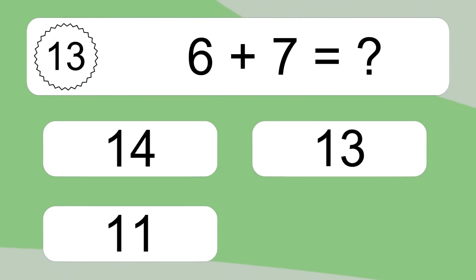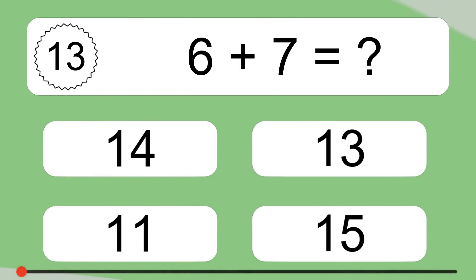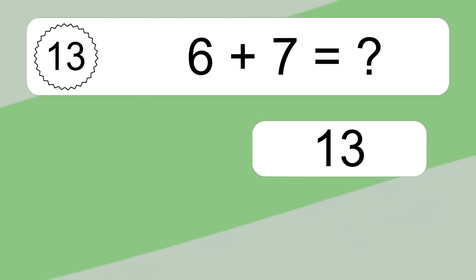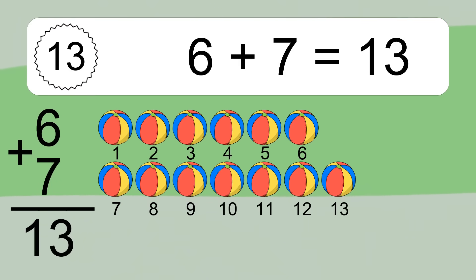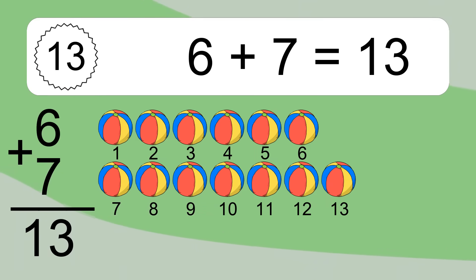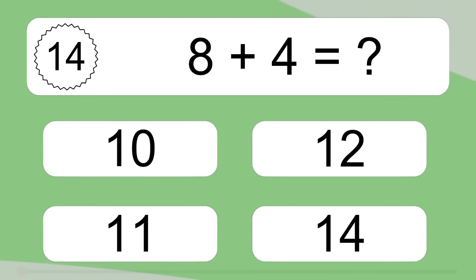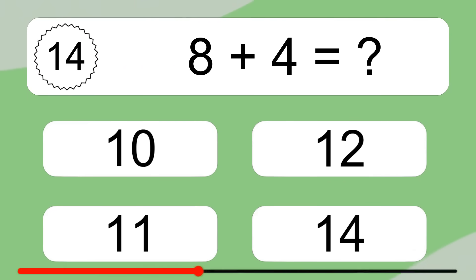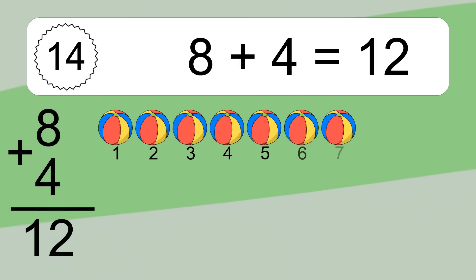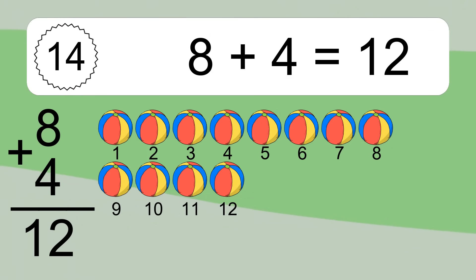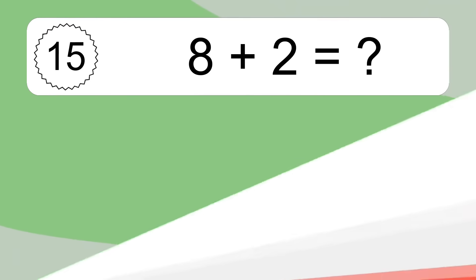6 plus 7 equals what? 1, 2, 3, 4, 5, 6, 7, 8, 9, 10, 11, 12, 13. 8 plus 4 equals what? 1, 2, 3, 4, 5, 6, 7, 8, 9, 10, 11, 12.